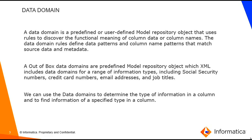Let's take an example. Assume your source data has an organization's employee details and you want to find out which column has which type of data or personal information. You run a profiling on this source data and enable data domain discovery. With the OOTB data domains, you can figure out if any column has PII — personal information — by seeing that column tagged to a PII data domain. This is how you can use the OOTB data domains.